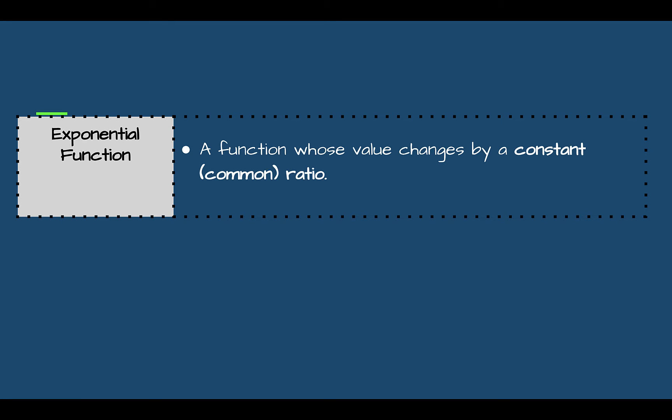An exponential function is a function whose value changes by a constant or common ratio. Essentially, this means it is multiplied by the same value over and over. This compares to linear functions from Topic 2 and 3, where we were adding or subtracting the same value over and over — here we are multiplying over and over.